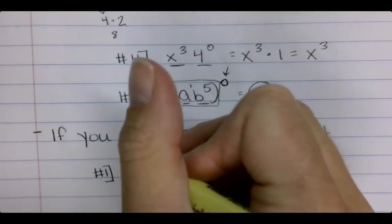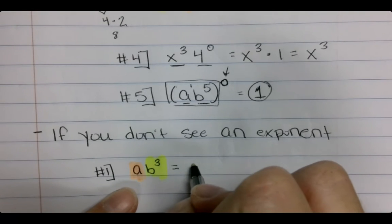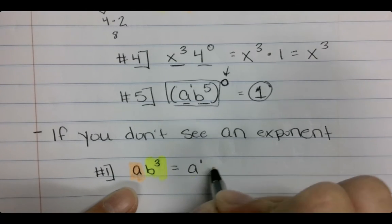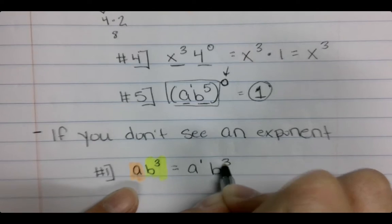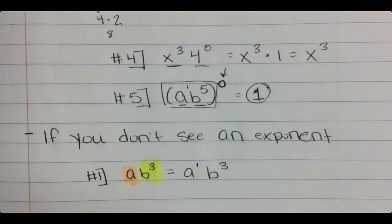So a's exponent, while you do not see it, is actually a one. And that three is only on the b.